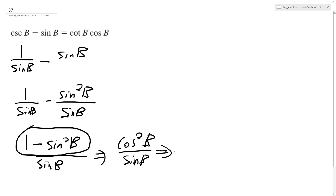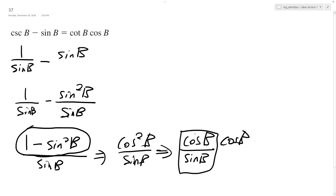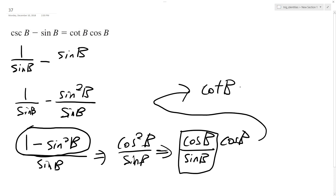Now what I do next is split this as cosine B times cosine B, and I'll let one of these combine with sine B — this is the same thing as cotangent, which is equal to cotangent B times cosine B. Which is what we have here, and that's it.